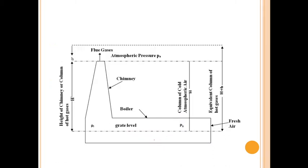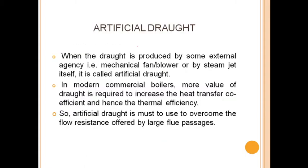This is the general diagram. In artificial draught, the draught is produced by some external agency — earlier it was produced naturally, but when it is produced by an external agency like a mechanical fan, blower, or steam jet, it is called artificial draught. In modern commercial boilers, a higher value of draught is required to increase the heat transfer coefficient and hence the thermal efficiency, so artificial draught must be used to overcome the flow resistance offered by large flue passages.